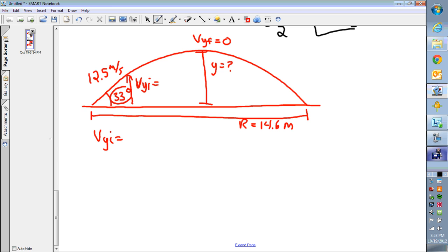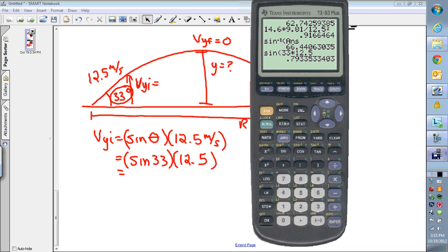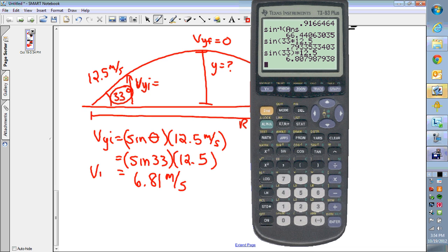It's sine of theta, sine of 33 times 12 and a half. So sine theta times 12.5 meters per second. The cosine would give you the VX. We want VY, so it's sine. So sine of 33, don't use the 66 that was sitting in your calculator, times 12.5 will give us what VY is. So we've got to take the sine of 33 and multiply by 12 and a half. And that gives us, sine of 33 in the bracket times 12 and a half gives us 6.80 or 6.81 if we round it off. So 6.81 meters per second is the initial y speed.